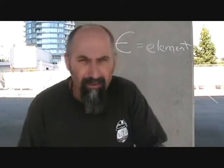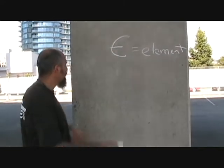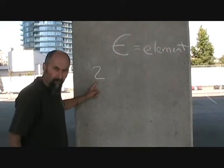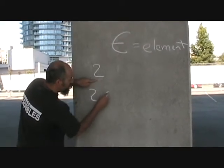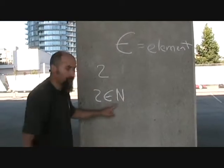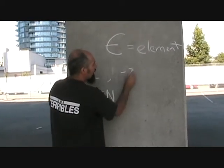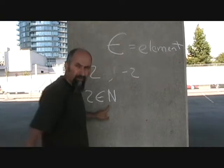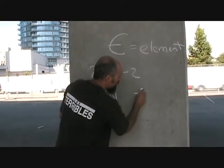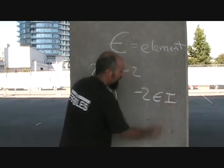Is it the natural numbers, the whole numbers, the integers? For example, I'm going to give you a number and say which group does it belong to? You're going to say: 2 is an element of the natural numbers. Which group would negative 2 belong to? Negative 2 is an integer, so you say: negative 2 is an element of the integers.